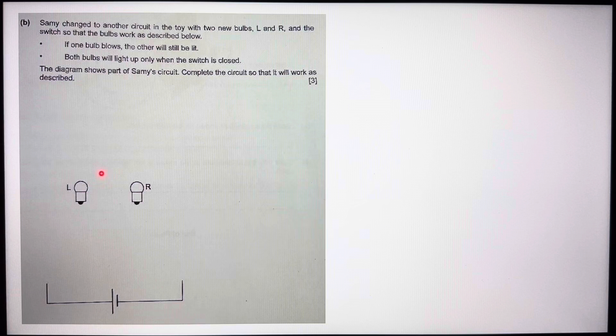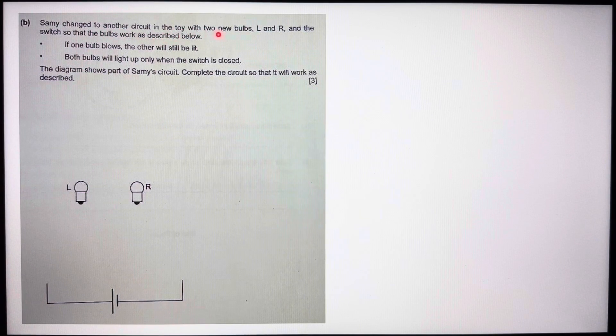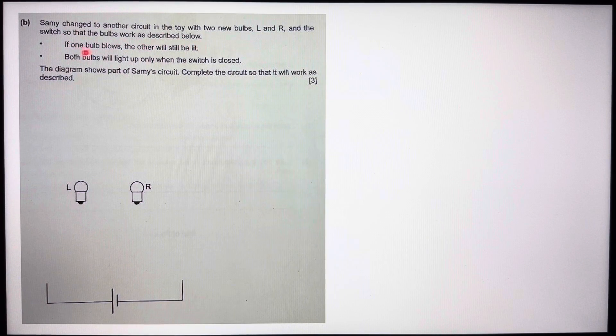Now for part B, Sammy changed to another circuit in a toy with two new bulbs L and R and the switch so that the bulbs work as described below. If one bulb blows, the other will still be lit. Both bulbs will light up only when the switch is closed. The diagram shows part of Sammy's circuit. Complete the circuit so that it will work as described.